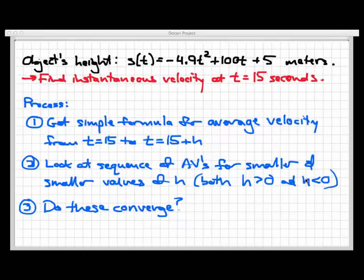So let's look at this example where we take an object and throw it straight up in the air. Its height above the ground is given by the formula s of t, equal to negative 4.9 t squared plus 100 t plus 5, measured in meters, where t is measured in seconds. What we're going to do here is find the instantaneous velocity of this object exactly at the time t equals 15 seconds. Again, this is not an average velocity — this is an instantaneous velocity at a single point in time.